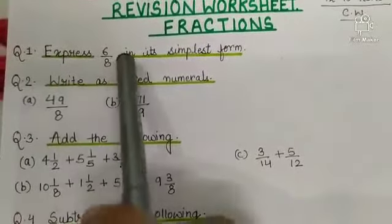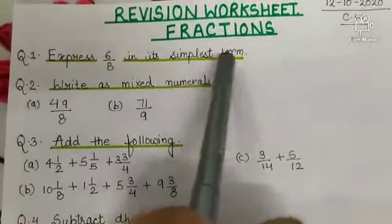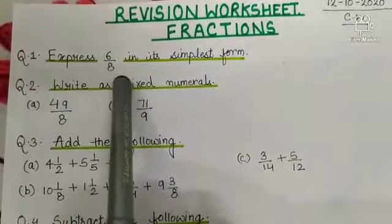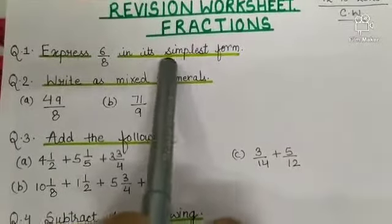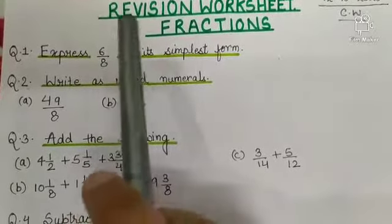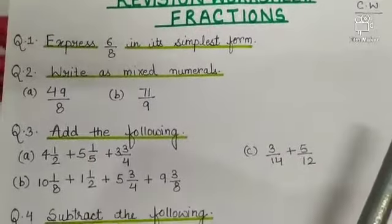Question 1: Express 6 by 8 in its simplest form. So you have to express 6 by 8 in its simplest form. Like 2 threes are 6 and 2 fours are 8, so 3 by 4 will be the answer.